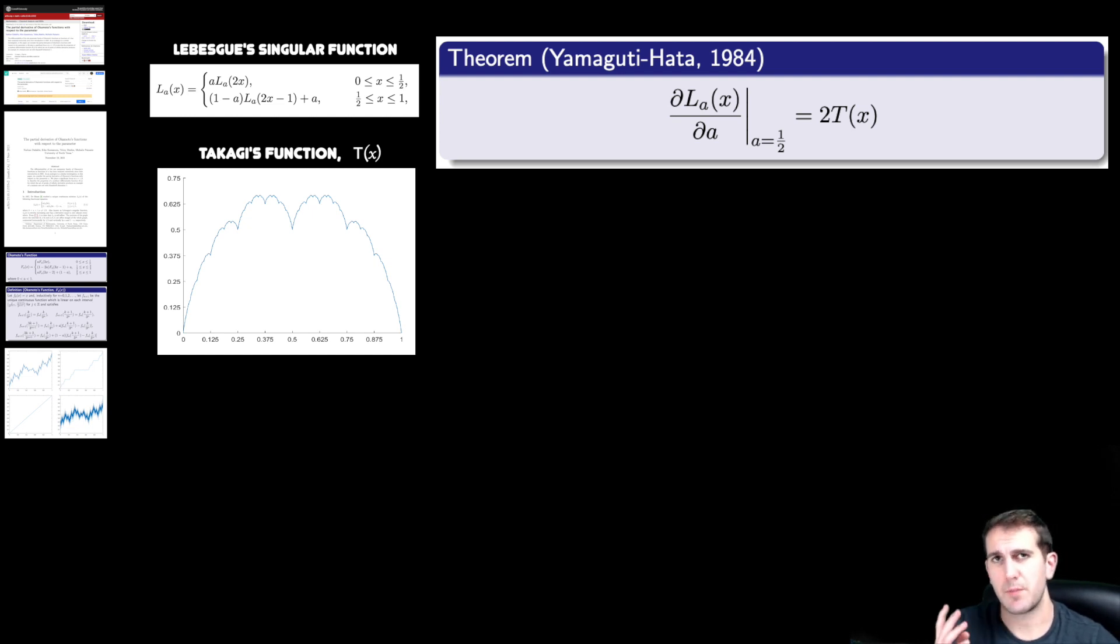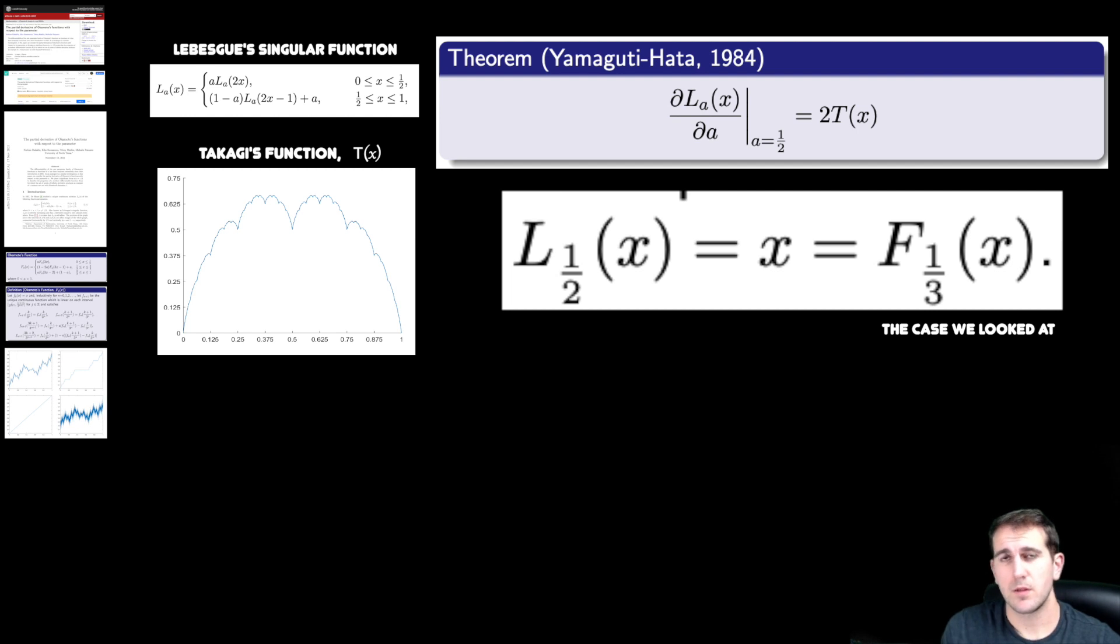And for us, it was the parameter equal to one third. So because the things were defined similarly, we thought we could do a similar analysis.